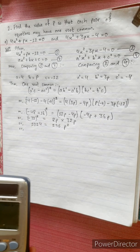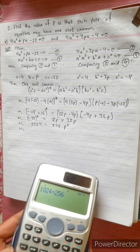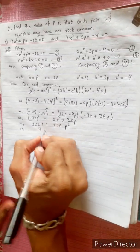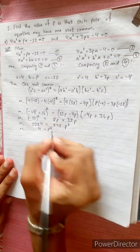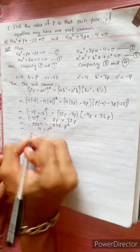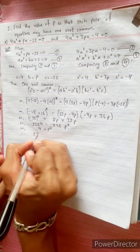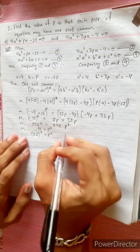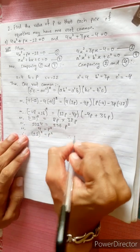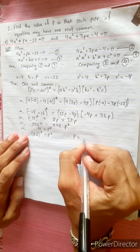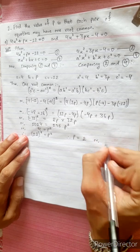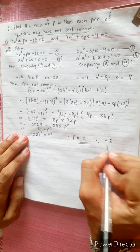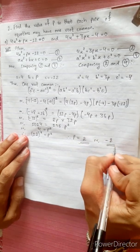1024 divided by 256 equals 4. Therefore p² = 4, which means p = ±2. So p = 2 or p = -2 are both valid answers.